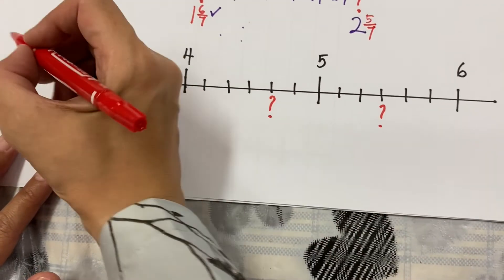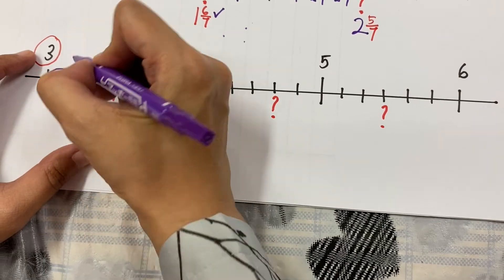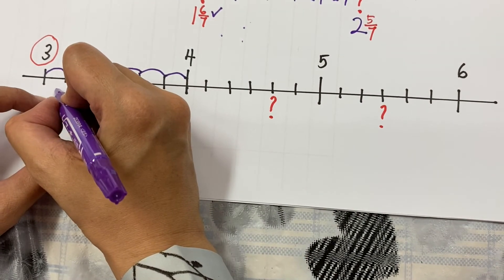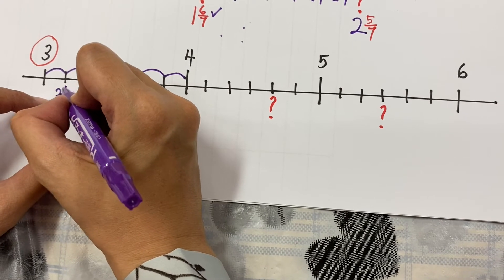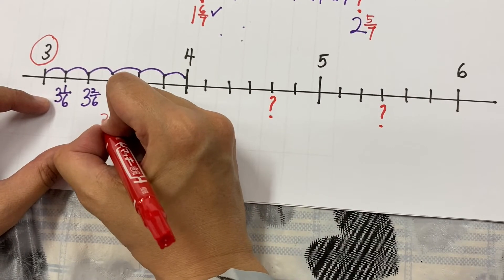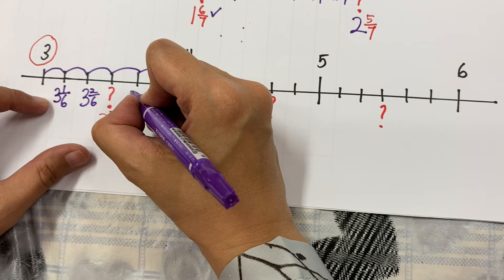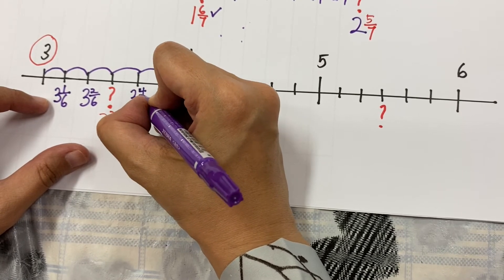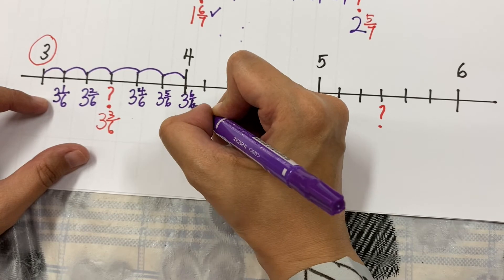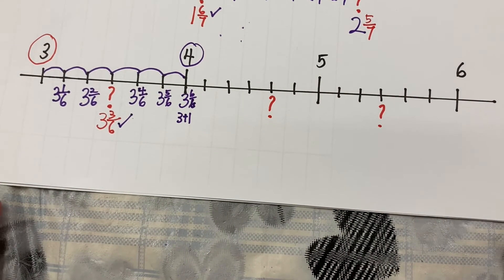Next example: always check the beginning number — in this case it's three, no longer one. Count the spaces: one, two, three, four, five, six — six spaces. So it goes three whole one out of six, three whole two out of six, and the missing number is three whole three out of six. Continuing: four out of six, five out of six, and six out of six is one whole, so three plus one gives four whole — the answer is correct.